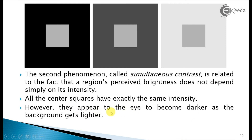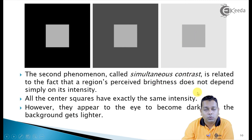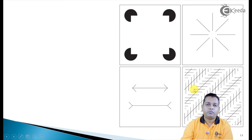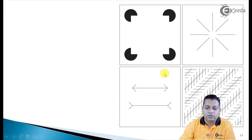The squares appear to the eye to become darker as the background gets lighter. From the first to the third, the background has changed, which is why the appearance of the central square also seems to change, even though it has a constant intensity level.